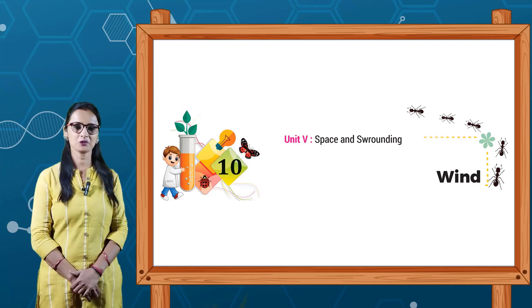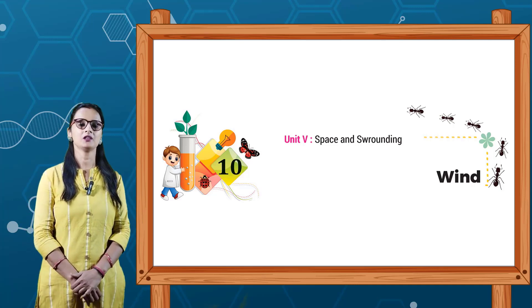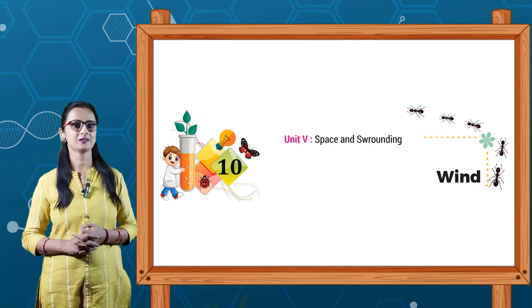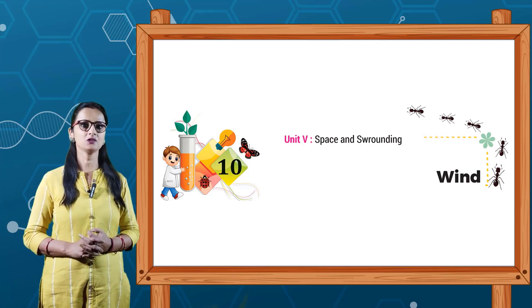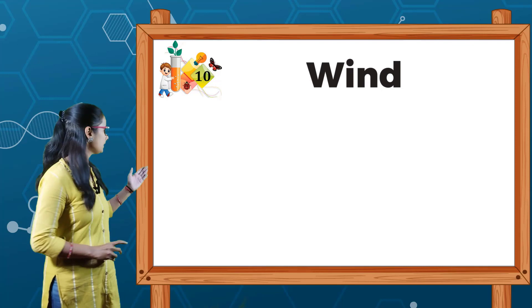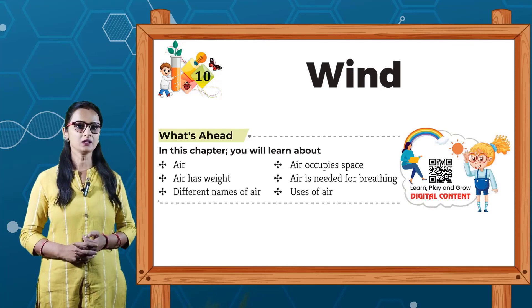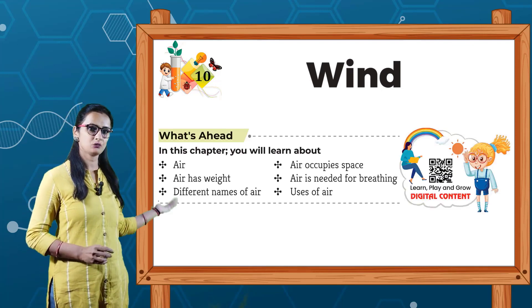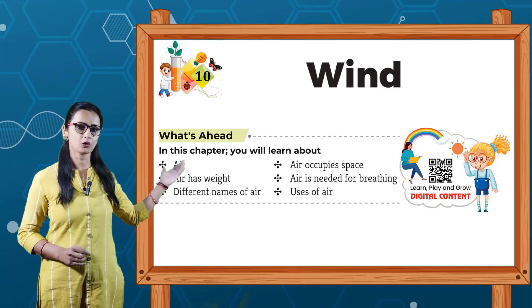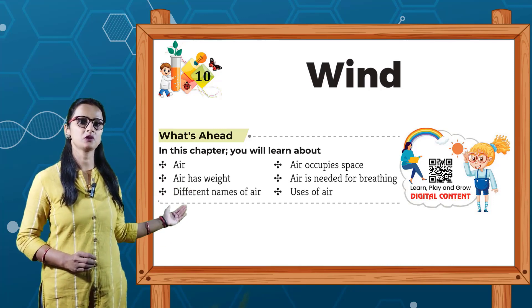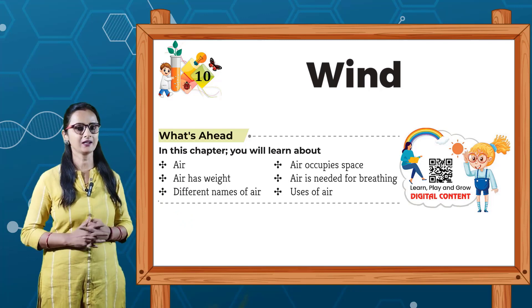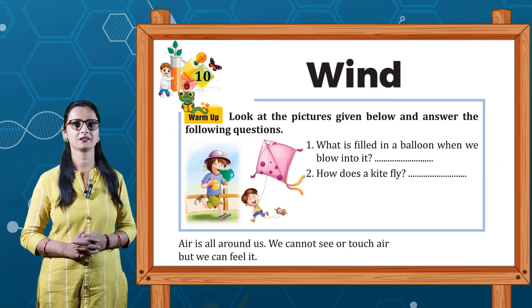Hello students, I hope you all are doing very well. Today we are going to start Chapter 10, Unit 5: Space and Surrounding, Chapter 10: Wind. In this chapter, we will learn about air — air has weight, different names of air, air occupies space, air is needed for breathing, and uses of air. So let's start this chapter with the warm-up exercise.